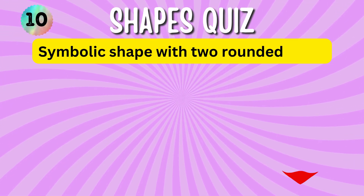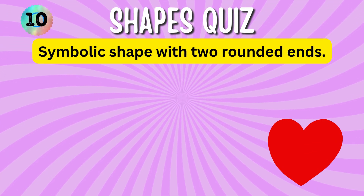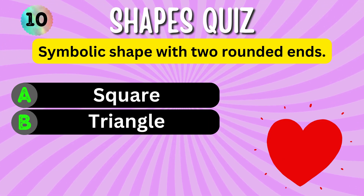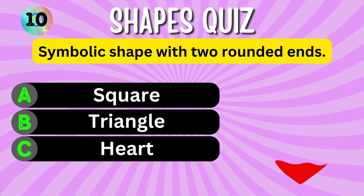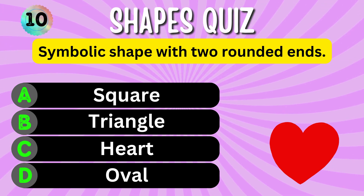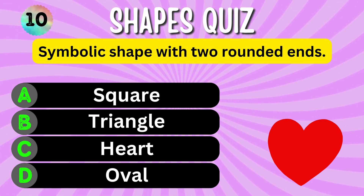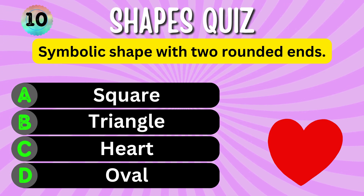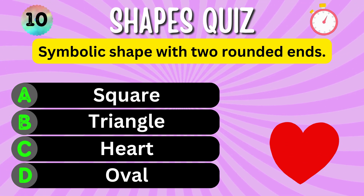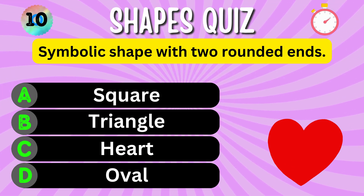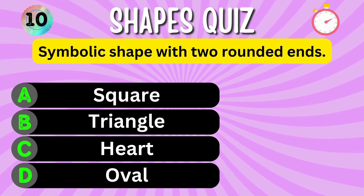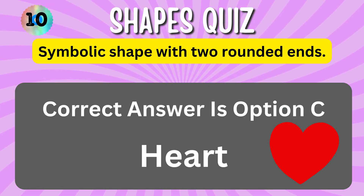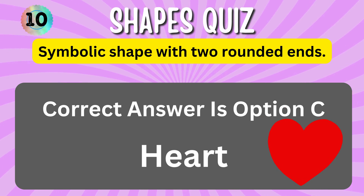Symbolic shape with two rounded ends. Option A. Option B. Option C. Option D. You have 5 seconds to choose the correct answer. Your time starts now. The correct answer is Option C, Heart.